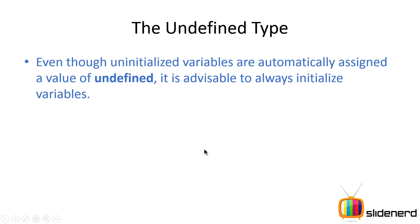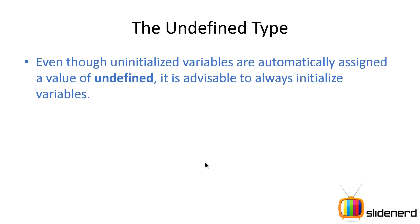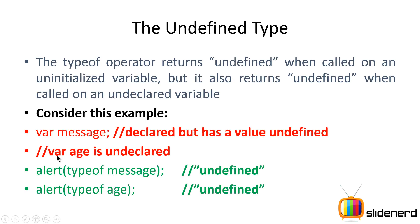Even though uninitialized variables are automatically assigned undefined, it is always best to give some value to a variable. The idea is: if you give values to all your variables and typeof is still returning undefined, it means somewhere in your code there is a variable that has not been declared. That's one way you can use undefined to help make your code bug-free.